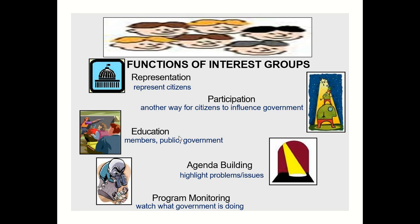Agenda building and program monitoring go together. Agenda building means highlighting problems or issues that exist in various policy areas — agricultural policy, educational policy, and so on. Program monitoring means watching what the government is doing, such as whether it's giving subsidies to agricultural institutions or funding farms to grow certain crops.